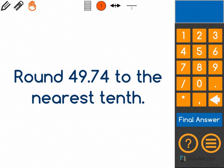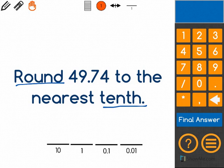This problem asks us to round 49.74 to the nearest tenth. I'm going to start by getting out my place value markers and now I will write the number 49.74 in the correct places on this chart.